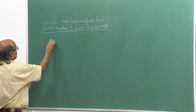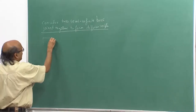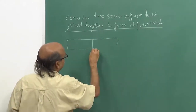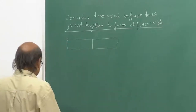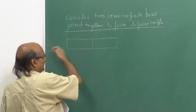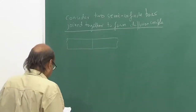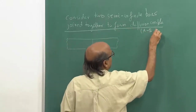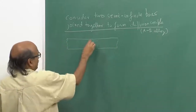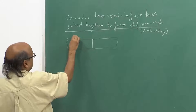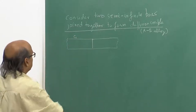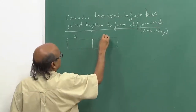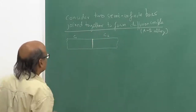The situation is like this. I have two long bars which are joined together. For all practical purposes they could be considered as infinite in both directions, of some alloy A-B. B is a solute. To begin with, this bar has a concentration of B atoms given by C1, and the bar on the right-hand side has a concentration of B atoms as C2.